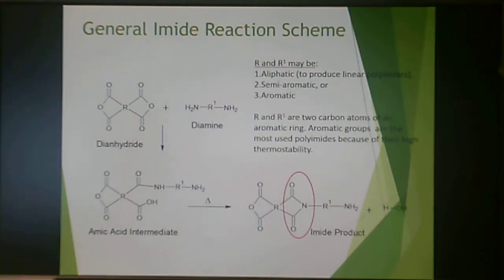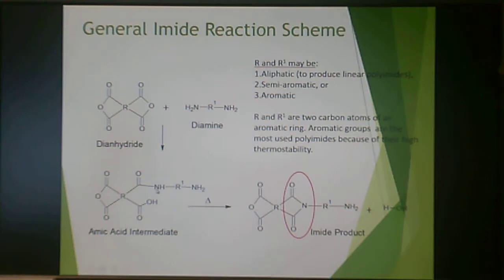This is a general reaction scheme. You have a dianhydride — R could be anything, R1 is anything. You create this amic acid intermediate, so this opens up the ring and adds here. You heat it up to close the ring and get the imide product, and you have water as a byproduct. So this is a condensation reaction.